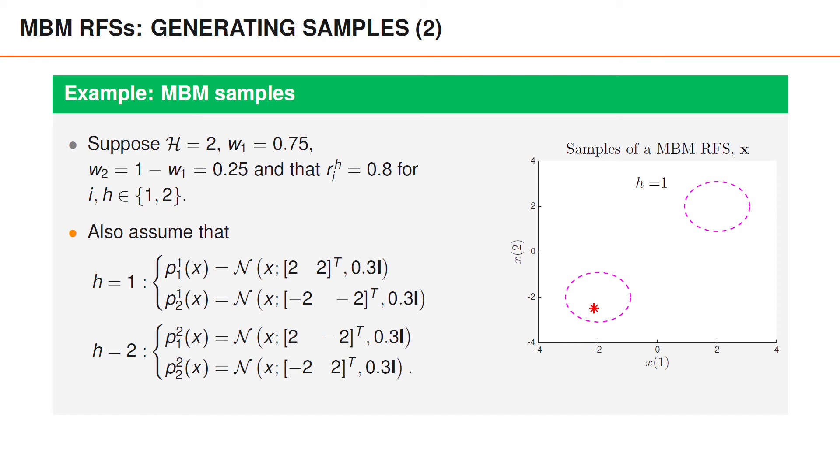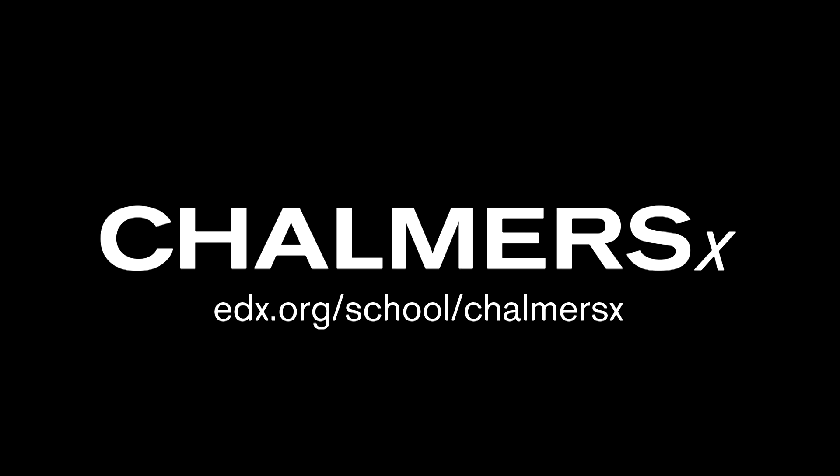Under hypothesis 2, the first Bernoulli random finite set has mean [2, -2], and the second has mean [-2, 2]. If you look at the samples from this multi-Bernoulli mixture, you can see that we mostly obtain samples from the first multi-Bernoulli distribution, but that we sometimes obtain samples from the second. We normally obtain one point, or a vector, from each of the two Bernoullis within the selected multi-Bernoulli, but it is not uncommon that we obtain one vector.